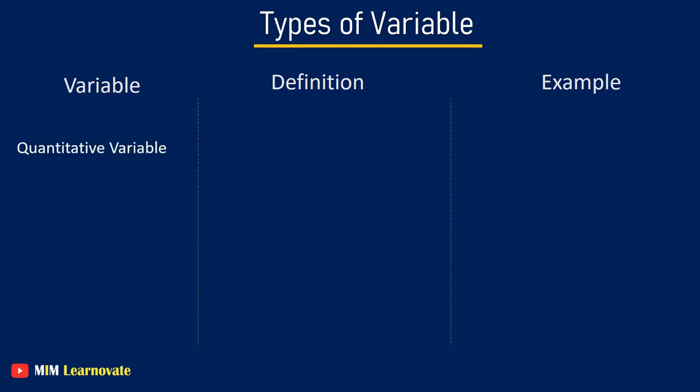Quantitative variable. Quantitative variables are any datasets that involve numbers or amounts. Examples might include height, distance or number of items.